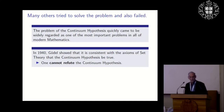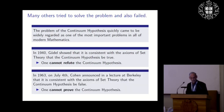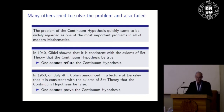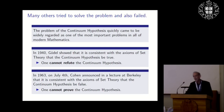In 1940, Gödel showed that it's consistent with the axioms of set theory that the continuum hypothesis be true — so one can't refute it. Then, in a defining moment on July 4th 1963 — Independence Day in the US — Cohen announced at Berkeley that it's consistent with the axioms of set theory that the continuum hypothesis be false. Cohen's theorem shows the continuum hypothesis is independent of the axioms of set theory: you cannot prove it and you cannot refute it.